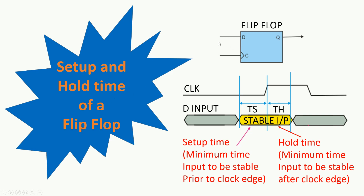As you all know, a flip flop is a memory element which is edge triggered. It can be positive edge triggered or negative edge triggered. In this example I am taking a positive edge triggered flip flop. It has D as an input, Q as an output, and C as a clock input. Whenever there is a positive edge on the clock input, D will be passed to Q. Otherwise, Q will hold its previous value. This is a very basic and crude level behavioral definition of a flip flop.